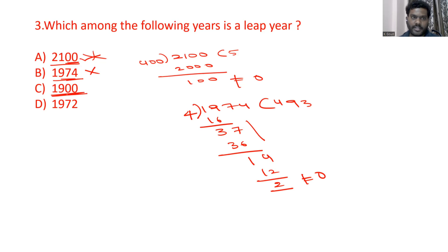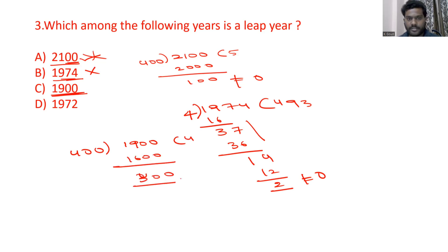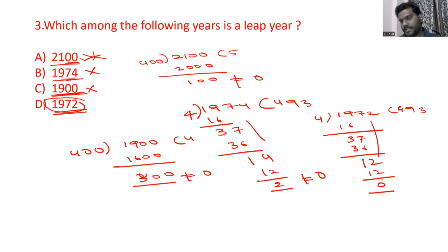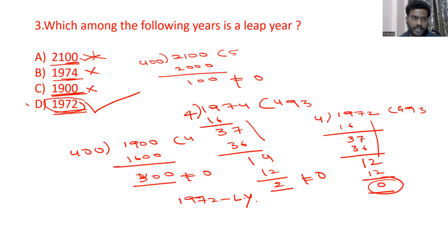Now consider 1900. It ends in two zeros, so it is a century. Divide 1900 by 400: 400×4=1600, remainder 300. Not equal to 0, so 1900 is not a leap year. Now consider 1972 — it is a normal year. Divide 1972 by 4: 4×4=16, remainder 3; 4×9=36, remainder 1; 4×3=12, remainder 0. The remainder is 0, so 1972 is a leap year. The answer is option D.